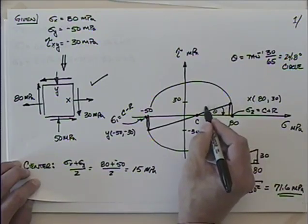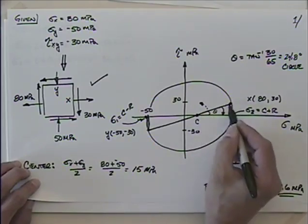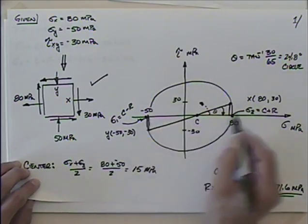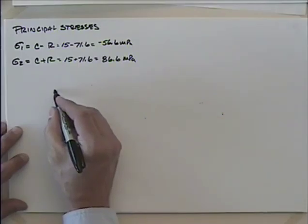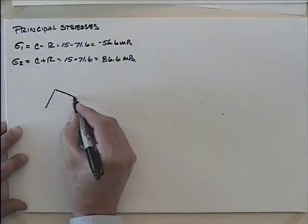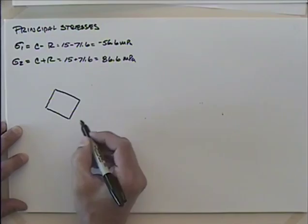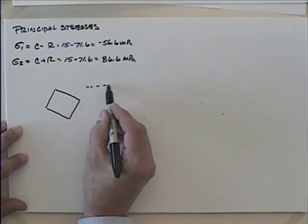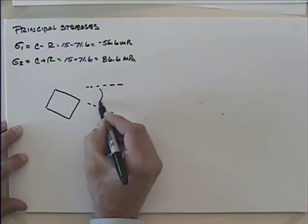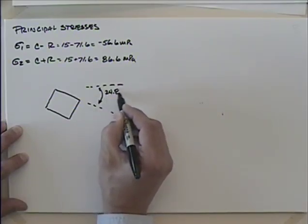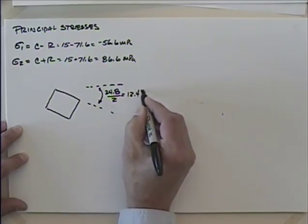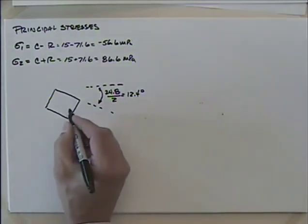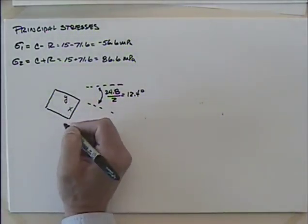We tend to always rotate the closest direction. So instead of taking x all the way over to sigma 1, it's closer to take x over to sigma 2. I'm going to rotate the element down. How far? 24.8 divided by 2, which is 12.4 degrees. So I've rotated clockwise 12.4 degrees, giving me my new x and y.